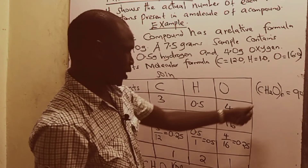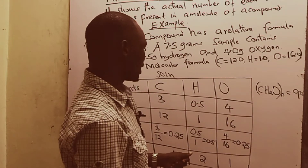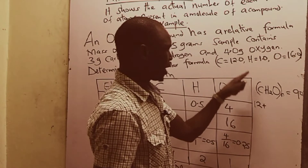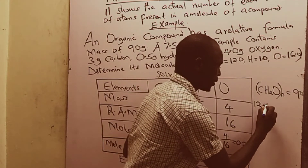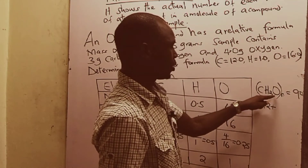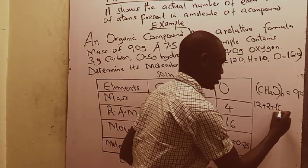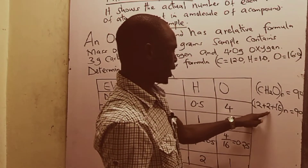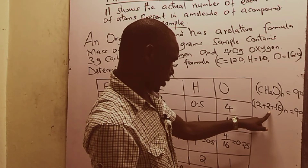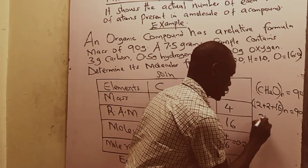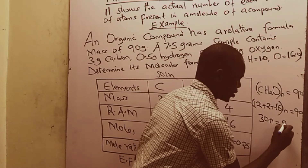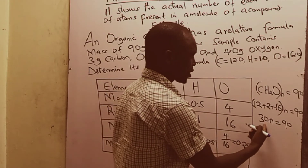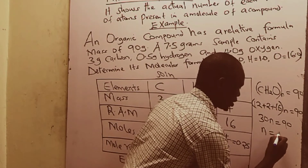We convert the empirical formula into its mass. The mass of carbon is 12; hydrogen is 1, but we have 2, so 1 times 2 gives 2; and oxygen is 16. So: (12 + 2 + 16) times N = 90. That gives us 30N = 90. Dividing both sides by 30, our N is equal to 3.